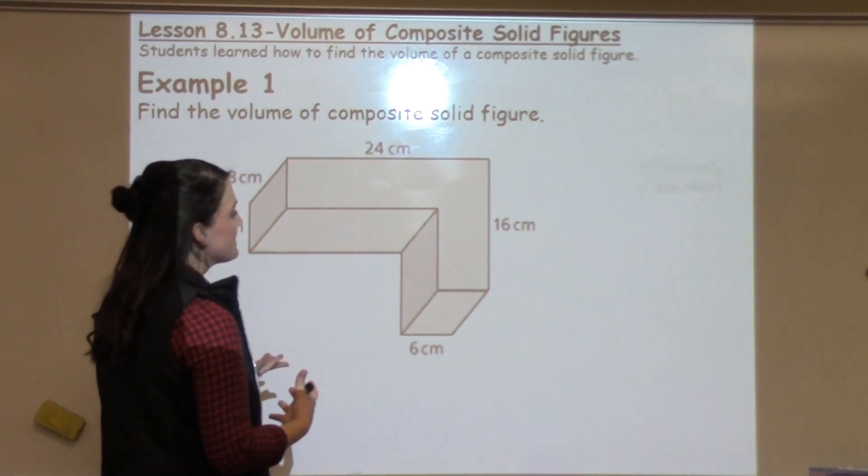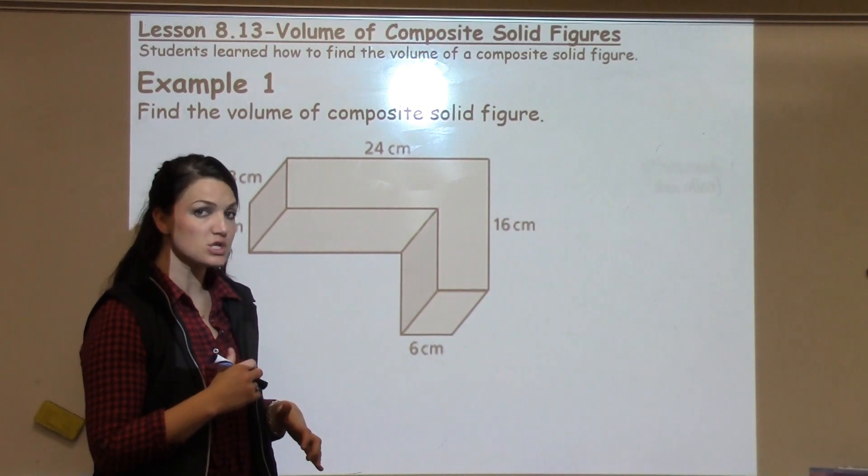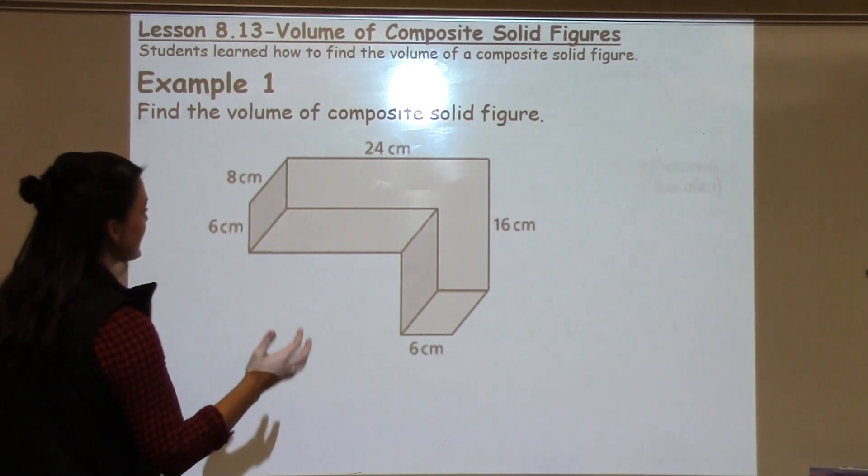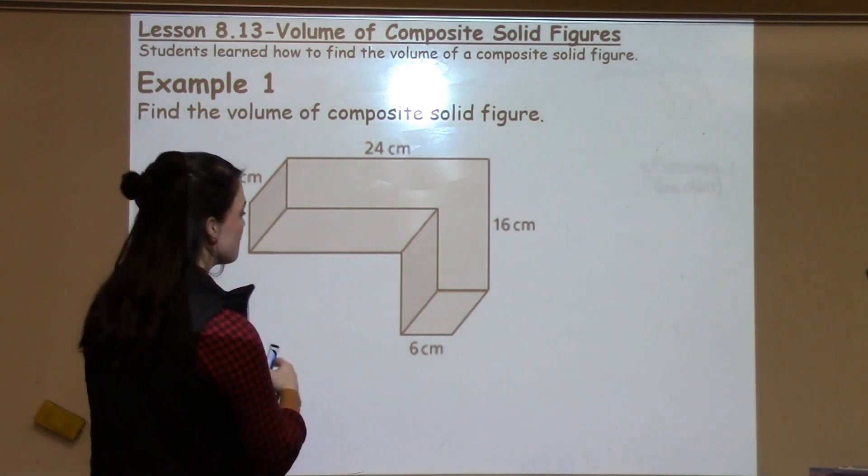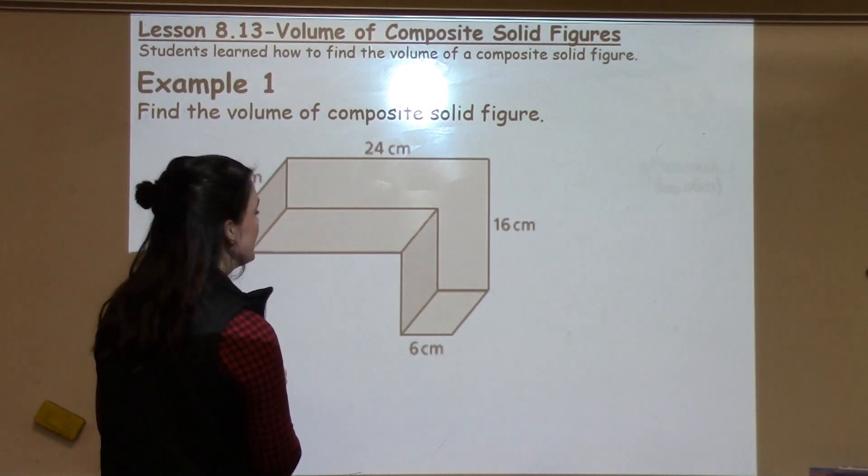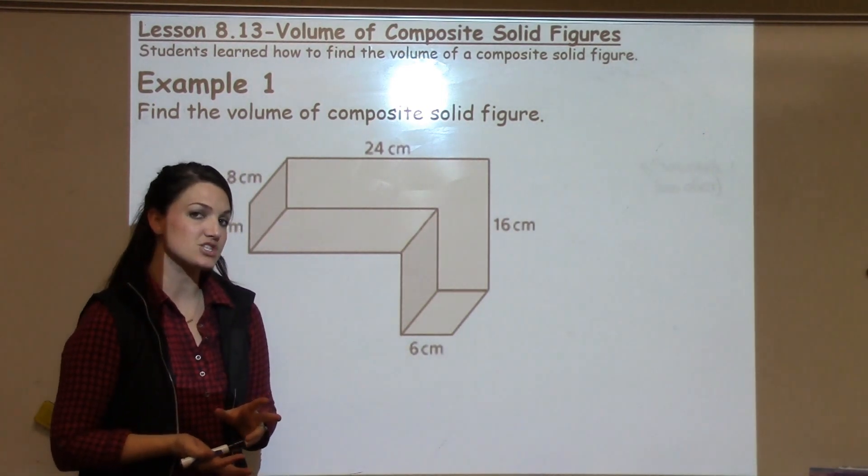A composite figure is just a figure that's made up of one or more shapes that are stuck together to make a different figure. We need to find the volume of that shape.